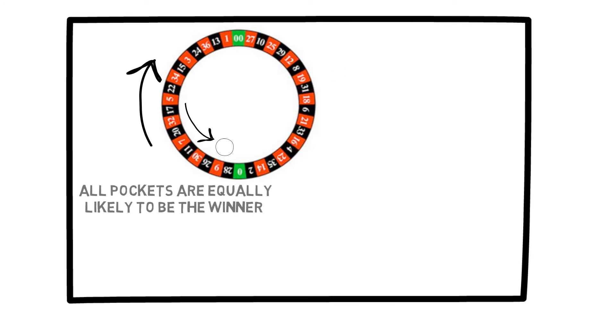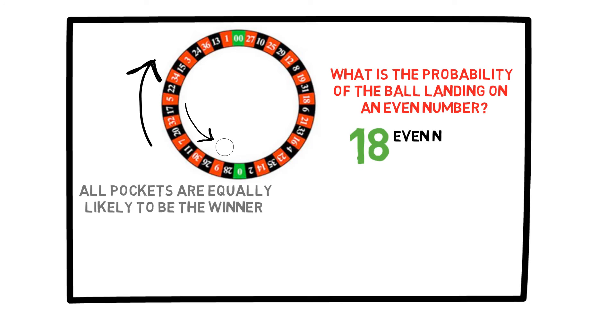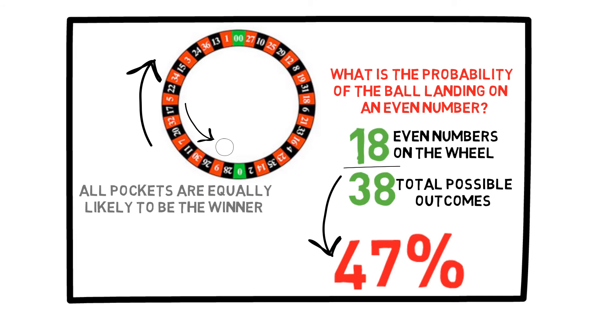If you bet that the ball will land on an even number, what is the probability of you winning? To solve this, first count how many outcomes would result in you winning. In this case, there would be 18. And then the total number of possible outcomes is of course 38. So your probability of winning is 18 over 38, which is about 47%.